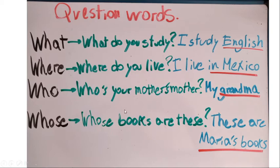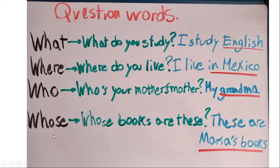Number three: 'who.' 'Who' is used to talk about identity or a person. For example: 'Who is your mother's mother?' — My mother's mother is my grandma. In this question, we want to know who is in your family, and we use 'who' to talk about identity — in this case, your grandma.